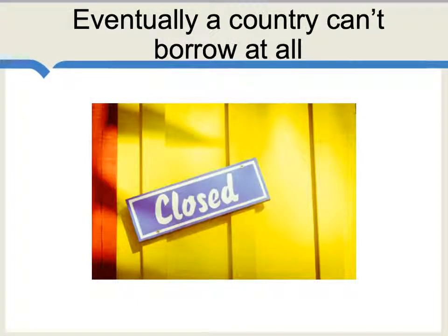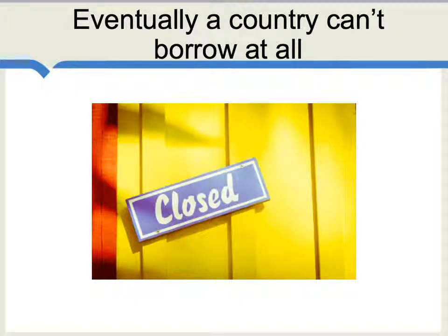If that negative dynamic continues, a country's government essentially reaches the point when it cannot borrow at all at any interest rate which it can afford. It then either has to default or seek outside aid through bailout funds, the IMF, or some other source. And that, in a nutshell, is why those high interest rates on sovereign debt are not really sustainable.